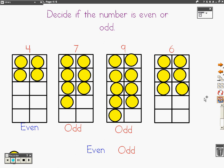What about the number six? The number six is even, because each one has a partner.